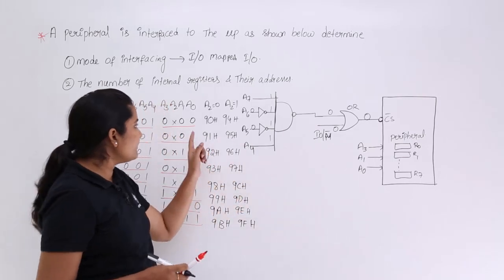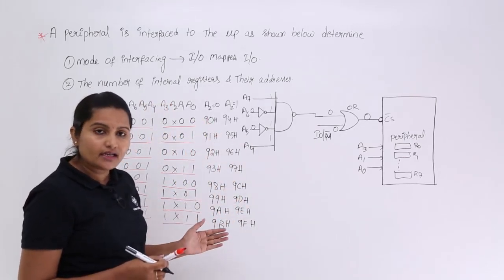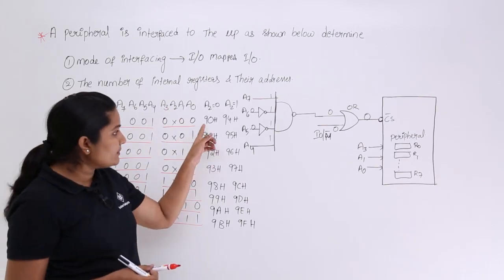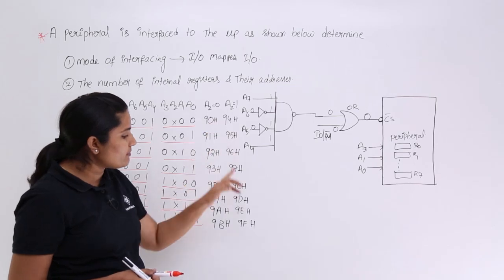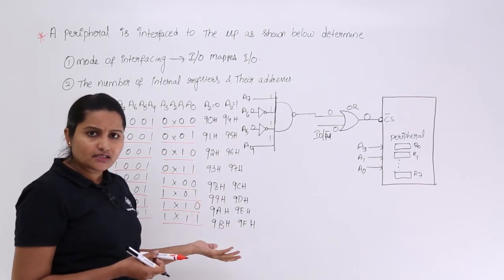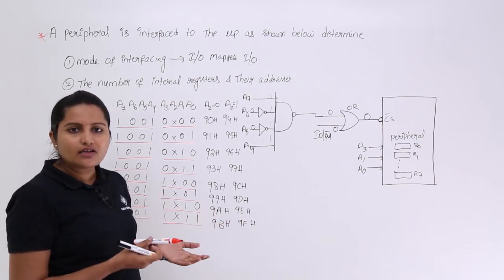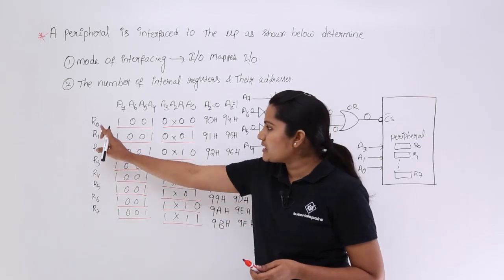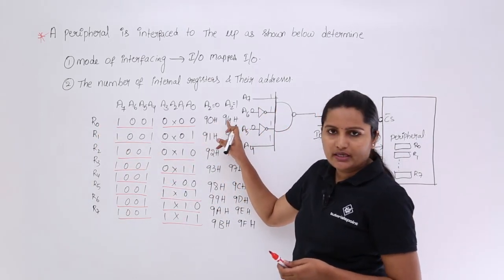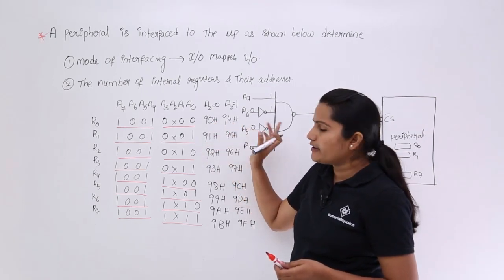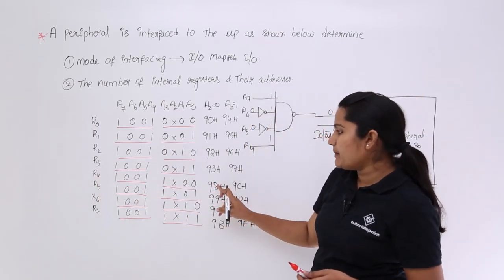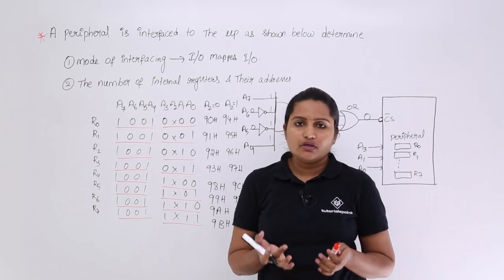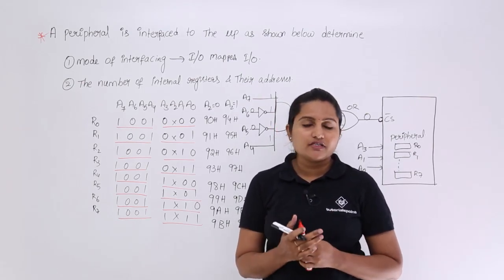So the address range of this peripheral is 90H to 9FH. Depending on the value of A2, the minimum address is 90H and the maximum address is 9FH. If the question asks for the address of each register individually — for example, R0's address is 90H or 94H, and R4's minimum address is 98H and maximum is 9CH — you can identify each register's address from the peripheral interfaced to the microprocessor in this way.